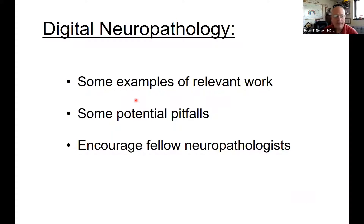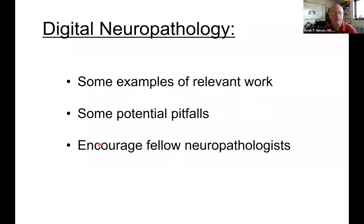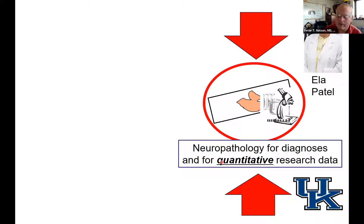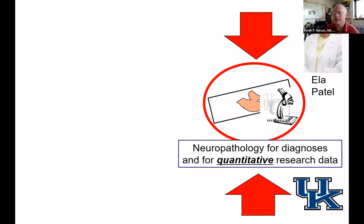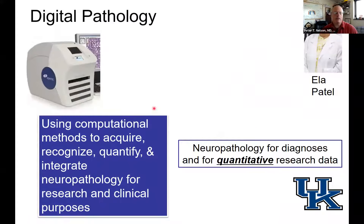So what I'm going to be talking about — this is going to be a fairly informal talk — I'll give some examples of relevant work, describe some potential pitfalls, and maybe critique some of our early work in this area, and give a little shout out to encourage fellow neuropathologists in the field. I come from the University of Kentucky, and this place has been working in quantitative neuropathology metrics for many years, for decades actually. The neurohistologist who has run this place has been Hila Patel.